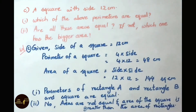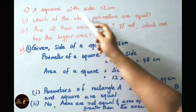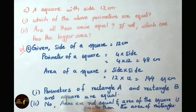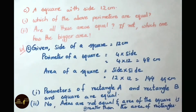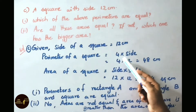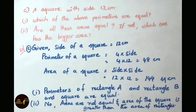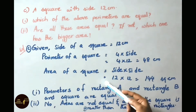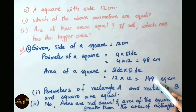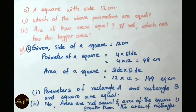Question C: find perimeter and area of a square with side 12 cm. Perimeter of square equals 4 into side equals 4 into 12 equals 48 cm. Area of square equals side into side equals 12 into 12 equals 144 square cm. Therefore area of the given square is 144 square cm.